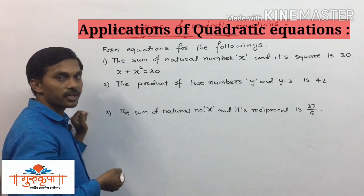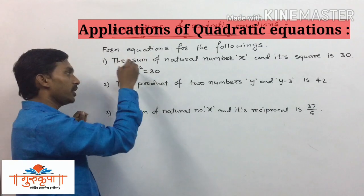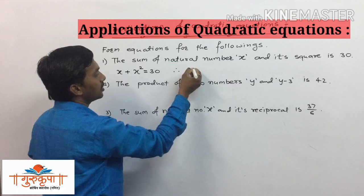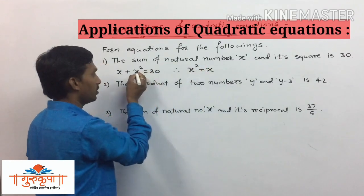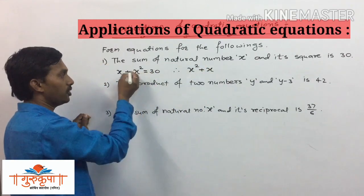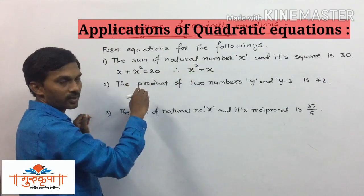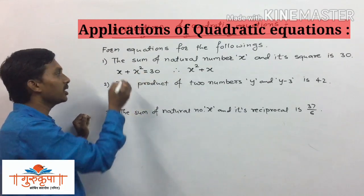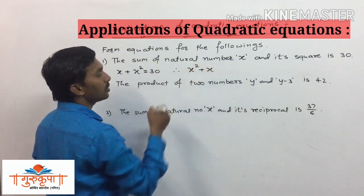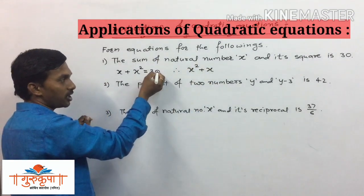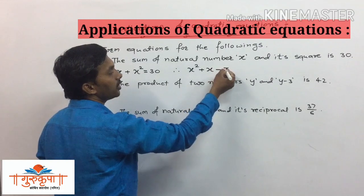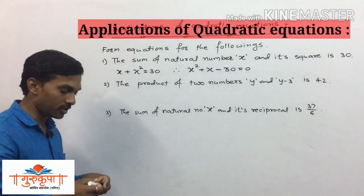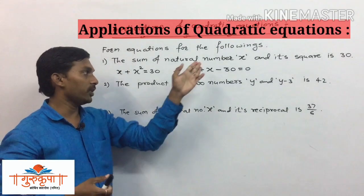It is a quadratic equation, and we can write it in standard form. We write the square term first — positive x squared — then the linear term, which is also positive x, and now we transfer the constant term to the left side, which becomes minus 30.